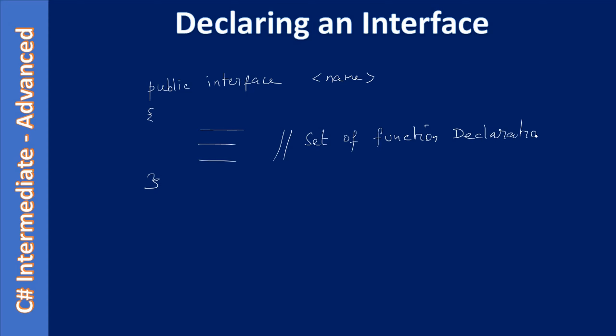First, let us see how we declare an interface. The scope is optional and you can declare an interface as public or private, or you can even leave the scope out. Next comes the interface keyword followed by the name given to the interface. After that we will declare a set of functions. An interface is simply a contract that tells what functions are present in the interface. Later, this contract will be signed by a class, which means the class implements all the functions defined in the interface.